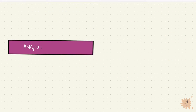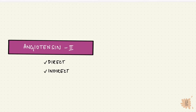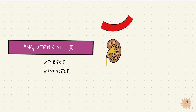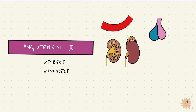Now let's see what angiotensin-2 does. It has direct effects and indirect effects on the vessels, the kidney, the adrenal cortex, the posterior pituitary, and the hypothalamus.